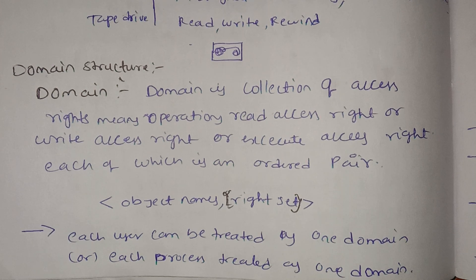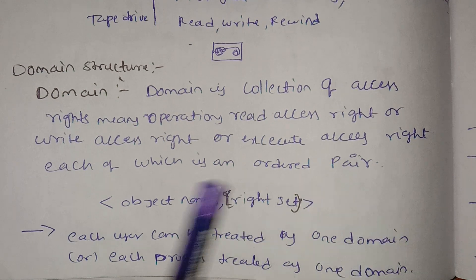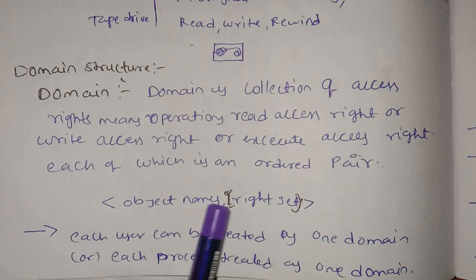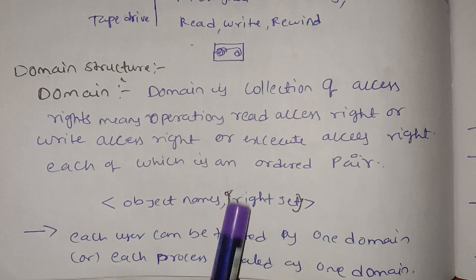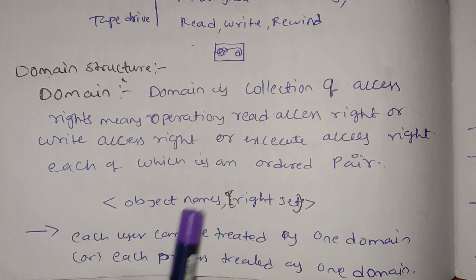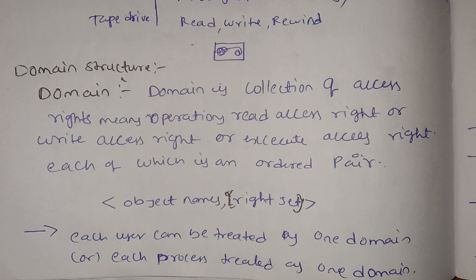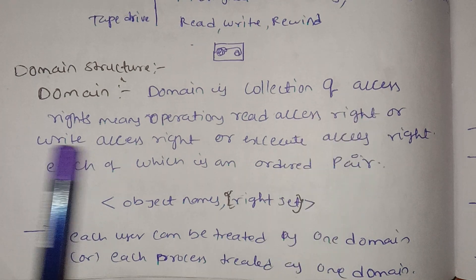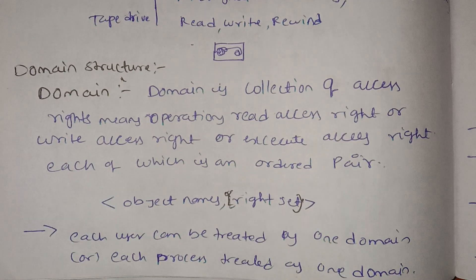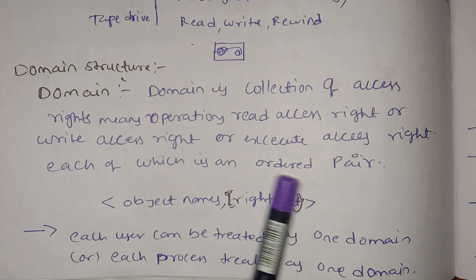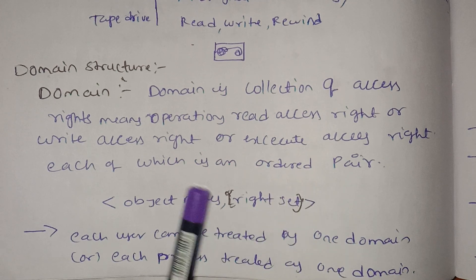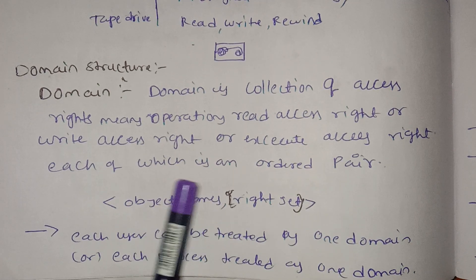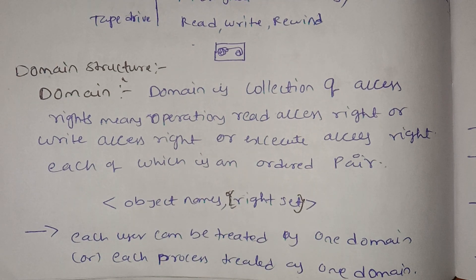Domain structure: each domain entry consists of an object name and a right set. For example, a file object has access rights such as read, write, and execute operations.